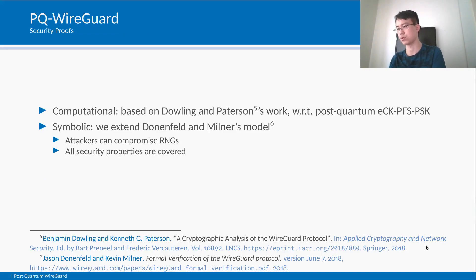PQ WireGuard is proven secure both in the computational and symbolic model. As Dowling and Patterson did for WireGuard, we proved the security properties of PQ WireGuard in the computational model with respect to ECK-PFS-PSK. The difference is that adversaries are allowed to be quantum polynomial time algorithms. Our symbolic model extends that of Donenfeld and Milner to allow attackers to compromise random number generators and recover all security properties.